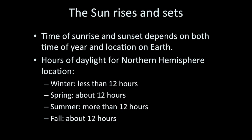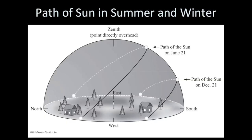Let me show you what this looks like for somebody in the continental U.S. This figure comes directly from the Path of the Sun lecture tutorial. It's a horizon diagram showing the cardinal directions — north, south, east, and west — with a person standing outside under the dome of the sky. We have the paths of the Sun on two different days of the year. The lightly dashed lines are into the screen, and the bold lines are out of the screen.